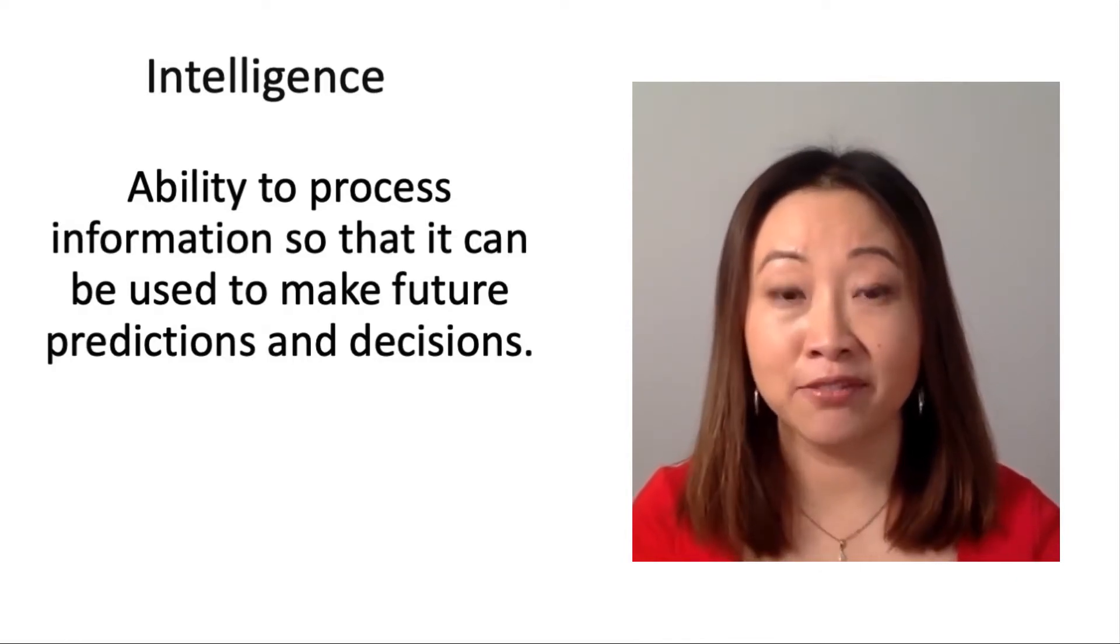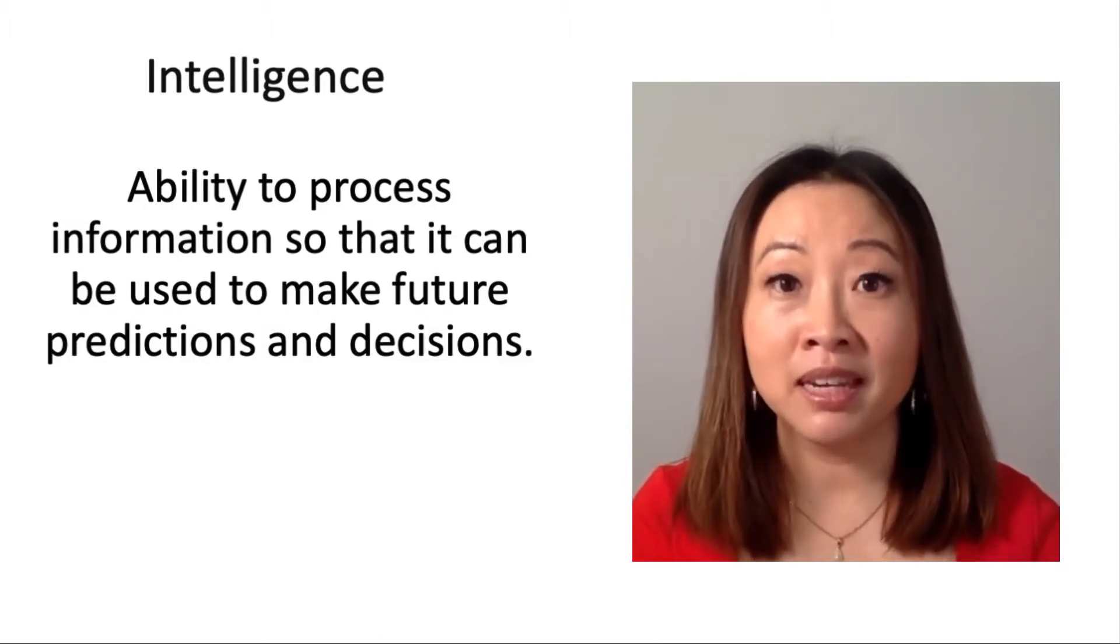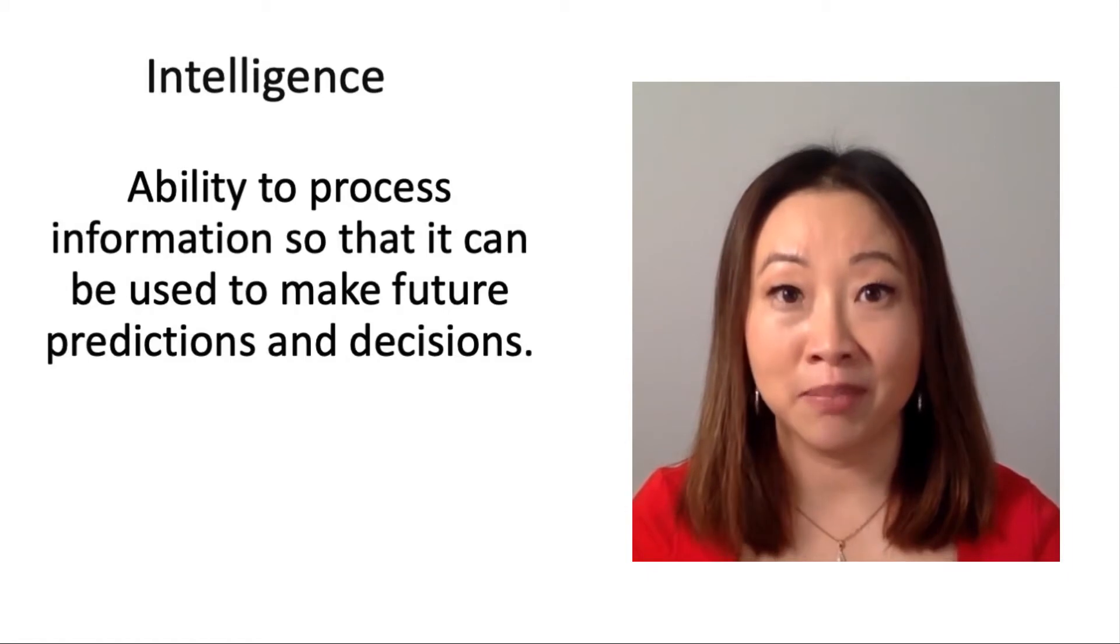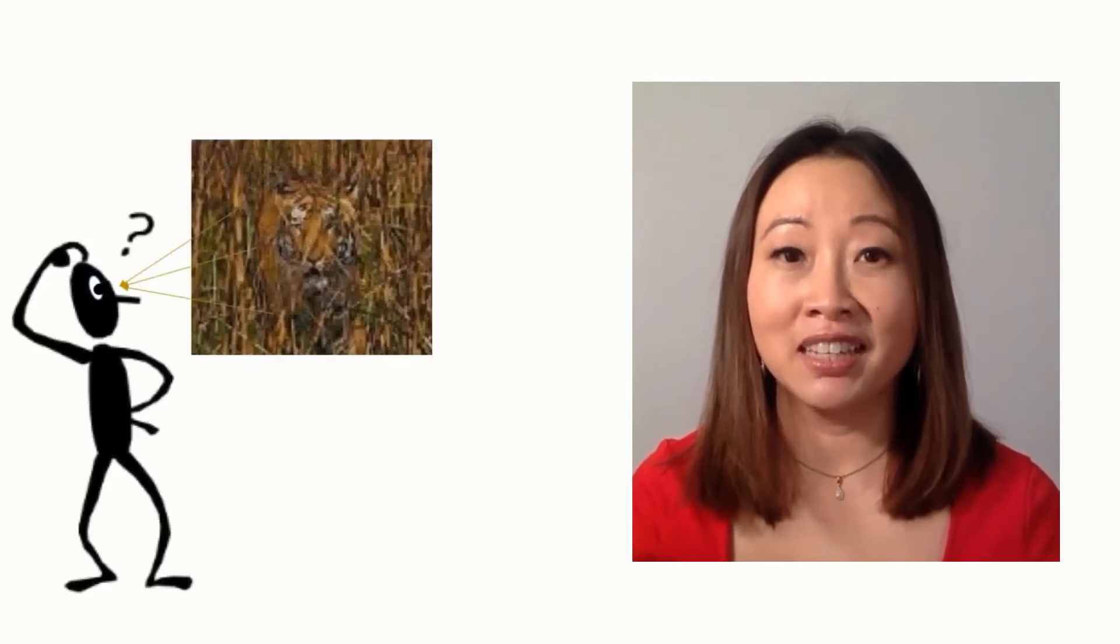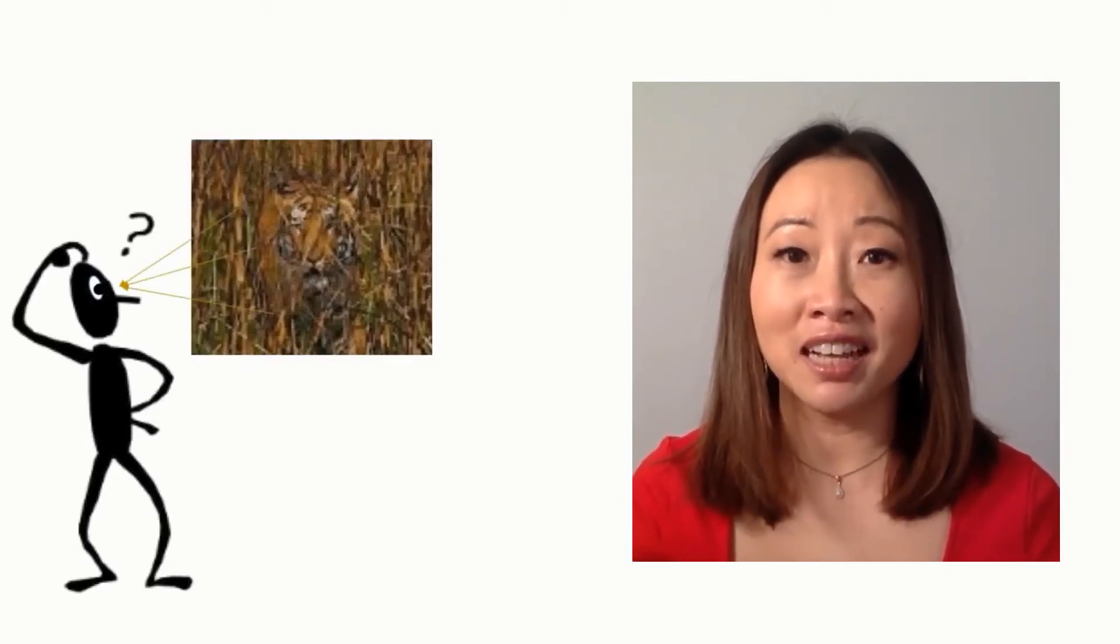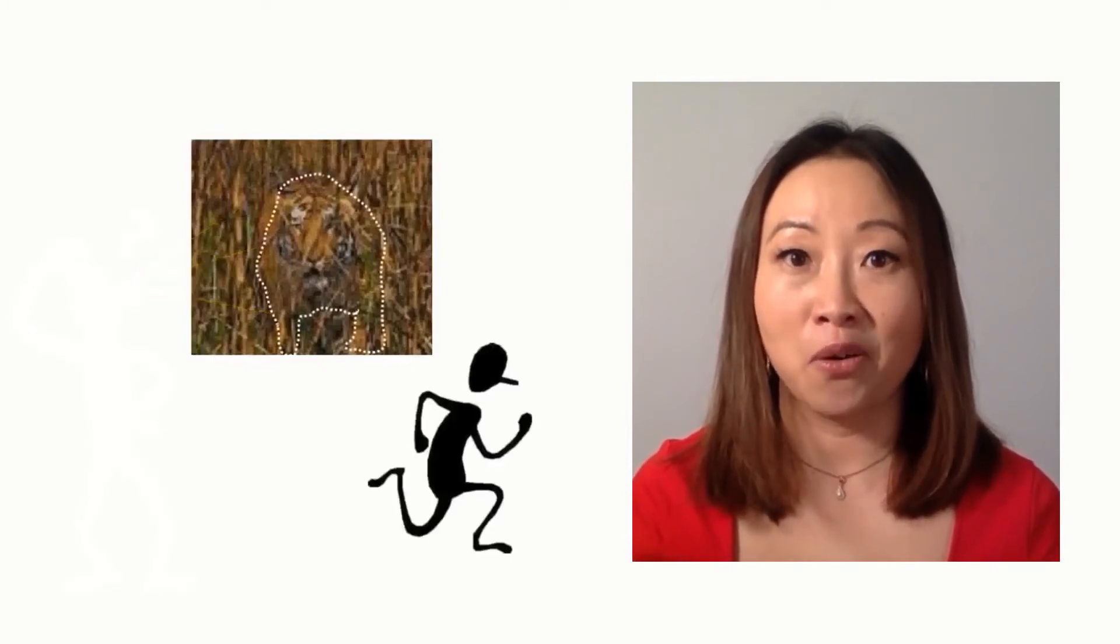When I say process information, what I mean is the ability to extract useful structure or interpretations from any sort of inputs. For example, let's say you're in a forest, and when the light rays from the forest scene hits your retinas, it requires intelligent processing to recognize that there is a tiger in the scene, and to choose your future actions accordingly.